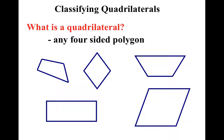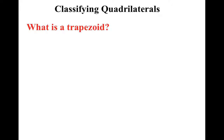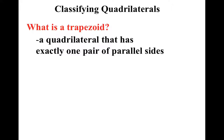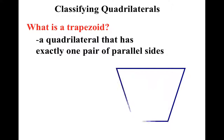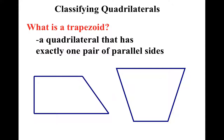So can we classify these any further? You bet we can. The first one I'm going to talk to you about is a trapezoid. A trapezoid is a quadrilateral that has exactly one pair of parallel sides, and they look like this. Do you notice that this side and this side are parallel? The other sides aren't parallel, but all I need is exactly one pair of parallel sides — that's a trapezoid.